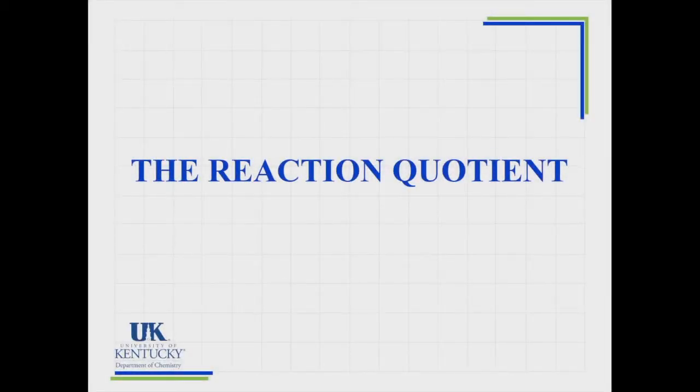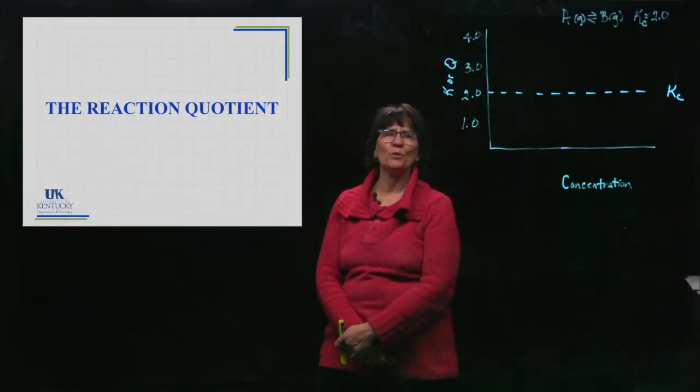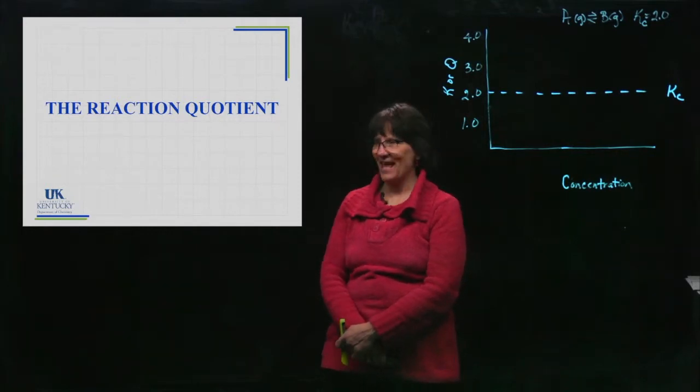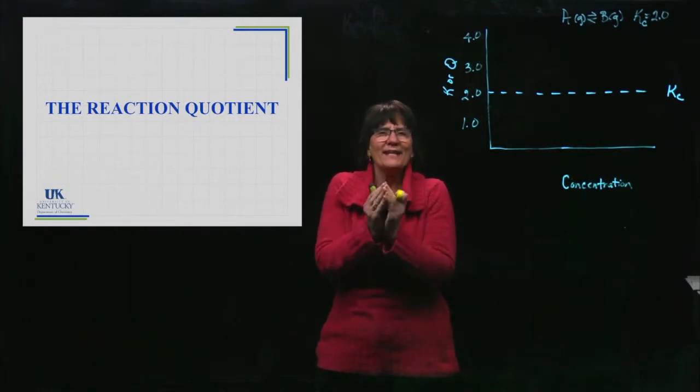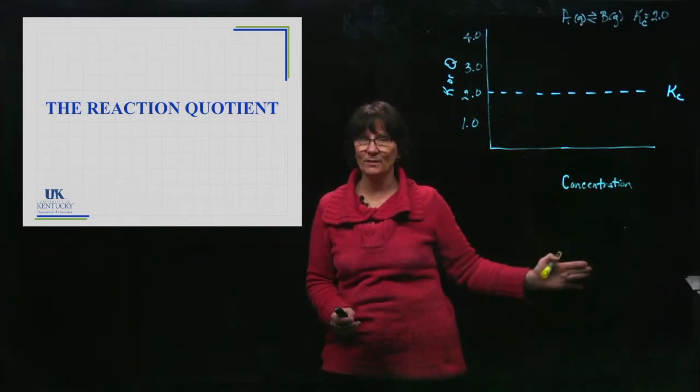So now we're going to talk about something called a reaction quotient. It's very similar to an equilibrium constant, but it's abbreviated with a Q instead, and it's where the reaction is right now. K, the equilibrium constant, is where it wants to be.